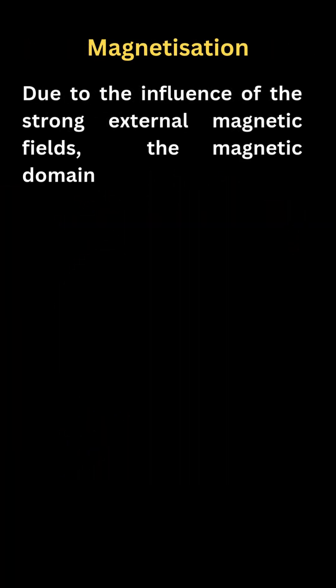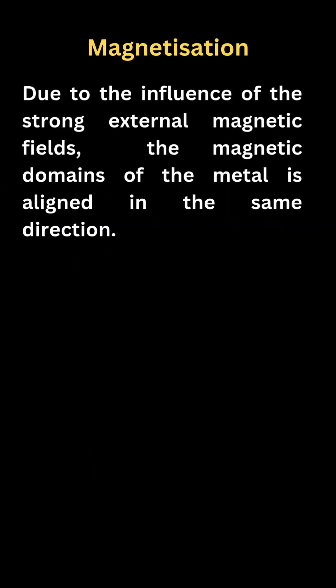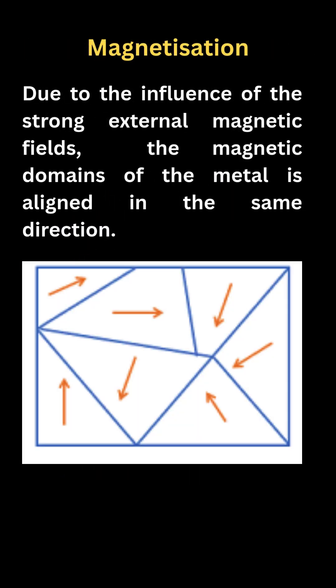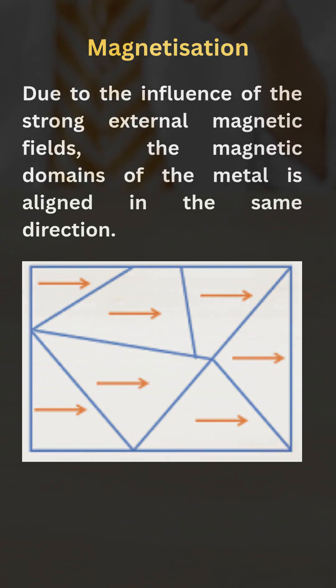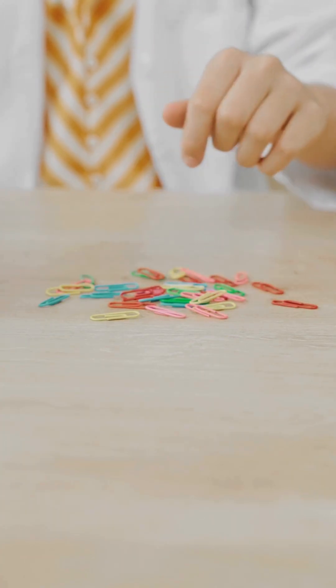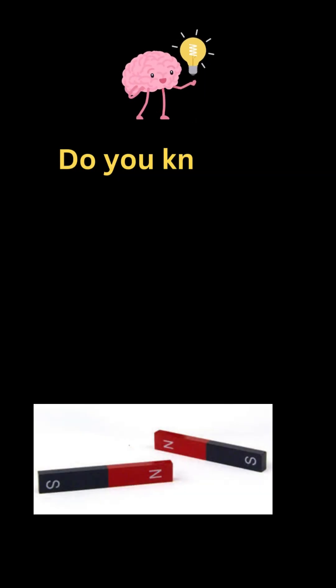When the metal is cooled down and changed into a solid, it is kept under the influence of a strong magnetic field. Due to this, the magnetic domains of the ferromagnetic metal are aligned in the same direction. Thus, an independent and permanent magnet is formed.